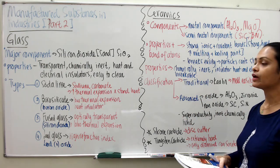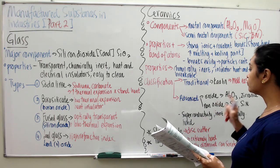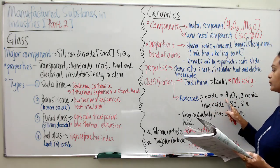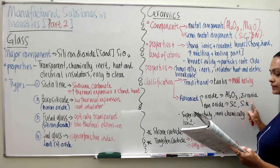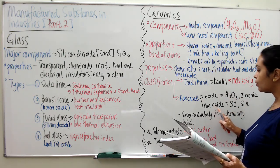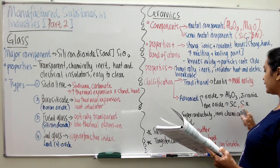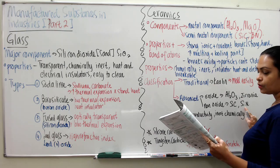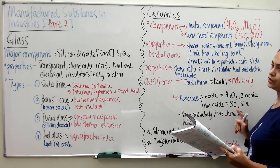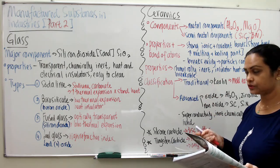The second classification is advanced ceramics, which are man-made and developed in various forms. One type is oxide-based, using aluminum oxide and zirconia. The other type is non-oxide advanced ceramic, which uses silicon carbide and silicon nitride. Both contain silicon.